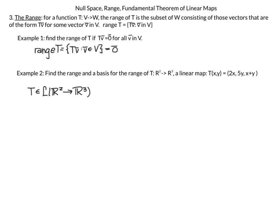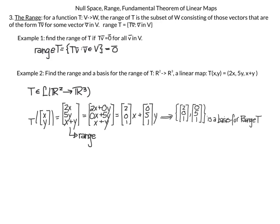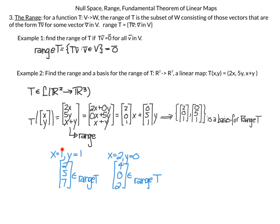T is a linear map from R2 to R3. Writing in column vector form, T(x, y) = (2x, 5y, x+y). This is exactly what the range looks like. For example, taking x=1 and y=1 gives (2, 5, 7) in the range; taking x=2 and y=0 gives (4, 0, 2) in the range.